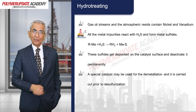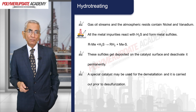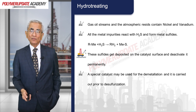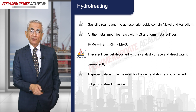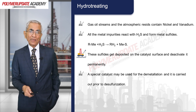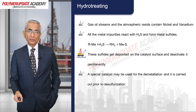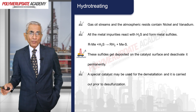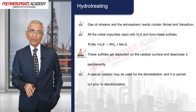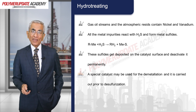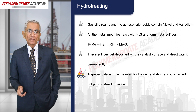All metal impurities react with H₂S to form metal sulfides — the organometallic compound plus H₂S gives a saturated compound and a metal sulfide. These sulfides are dangerous as they get deposited onto the catalyst surface and permanently deactivate it. Therefore, metal removal is most important — not for recovery of the metal, but to prevent sulfide deposition on the catalyst. A special catalyst may be used for demetallization, carried out prior to desulfurization.